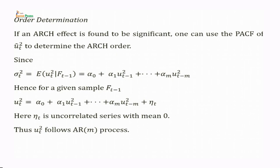First we check the significance of the ARCH effect, and if it is found to be significant, then one can use the PACF of û_t squared to determine the ARCH order. We plot the PACF of û_t squared. Using the PACF, or you can also plot the ACF, you can observe the behavior of PACF and ACF, which helps in determining the order of the process.